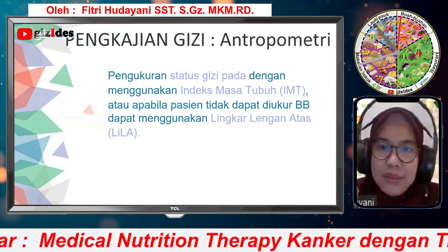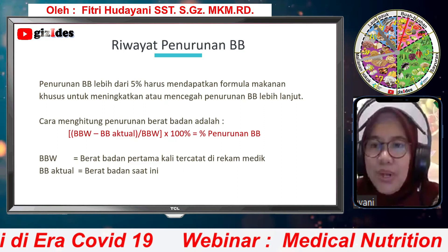Ini adalah cara menghitung penurunan berat badan. Mulai hari ini kita aware dengan penurunan berat badan pasien kita. Kemudian ini adalah indikator antropometri, saya rasa semuanya sudah sangat fasih dengan ini. Ini adalah data biokimia — lihat data biokimia yang memang menjadi indikator penting pada pasien kita. Kemudian ini adalah kondisi fisik dan klinis. Jangan malas kita menilai kondisi fisik dan klinis.